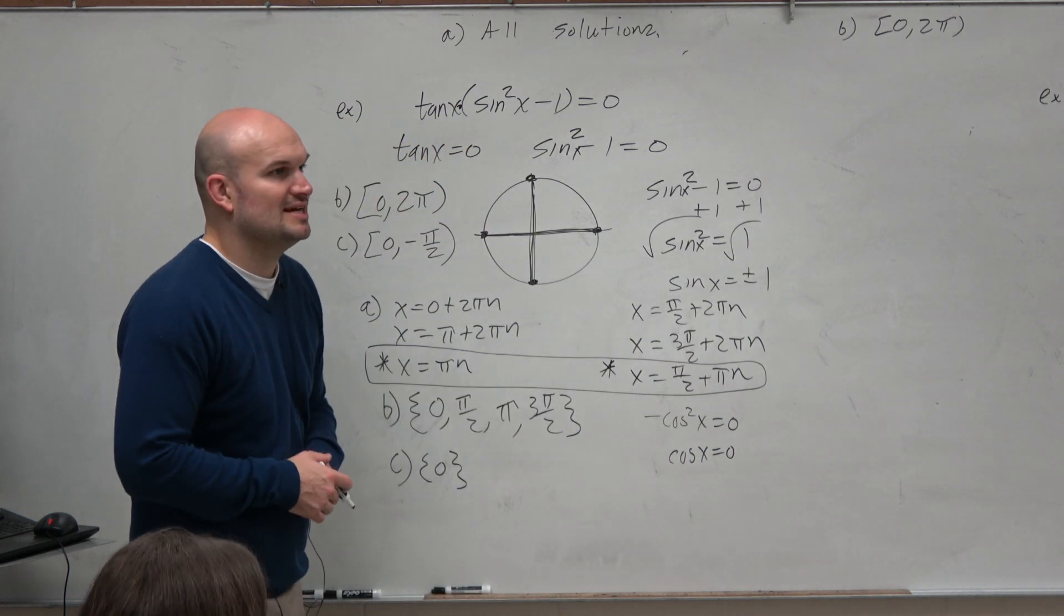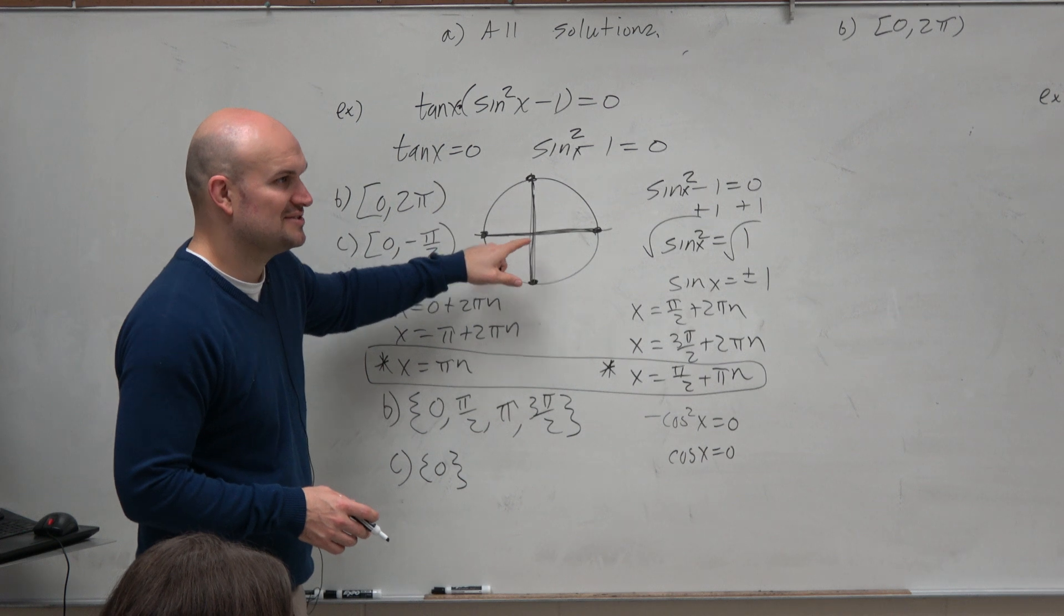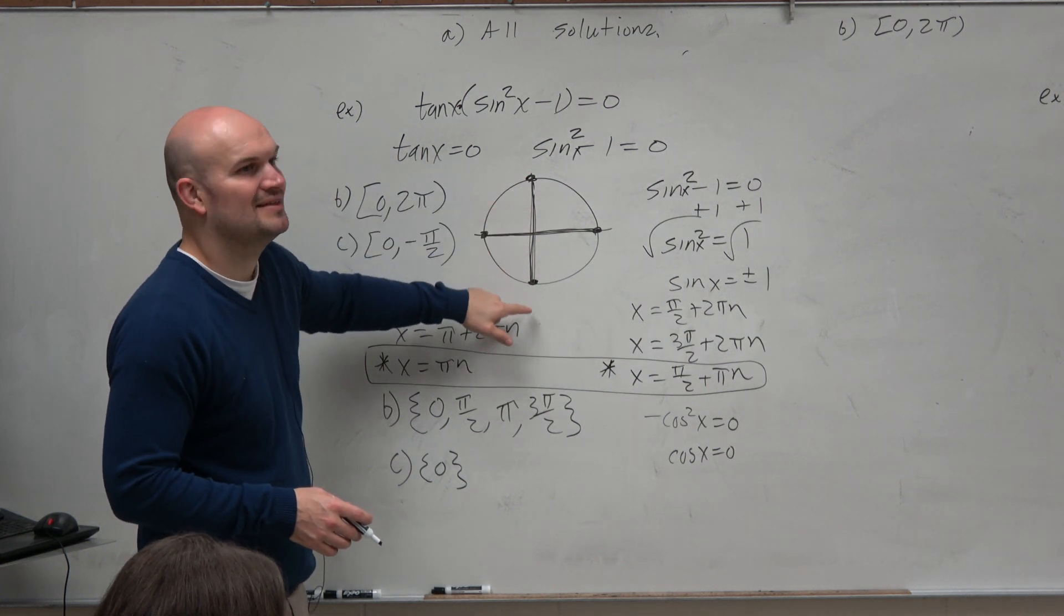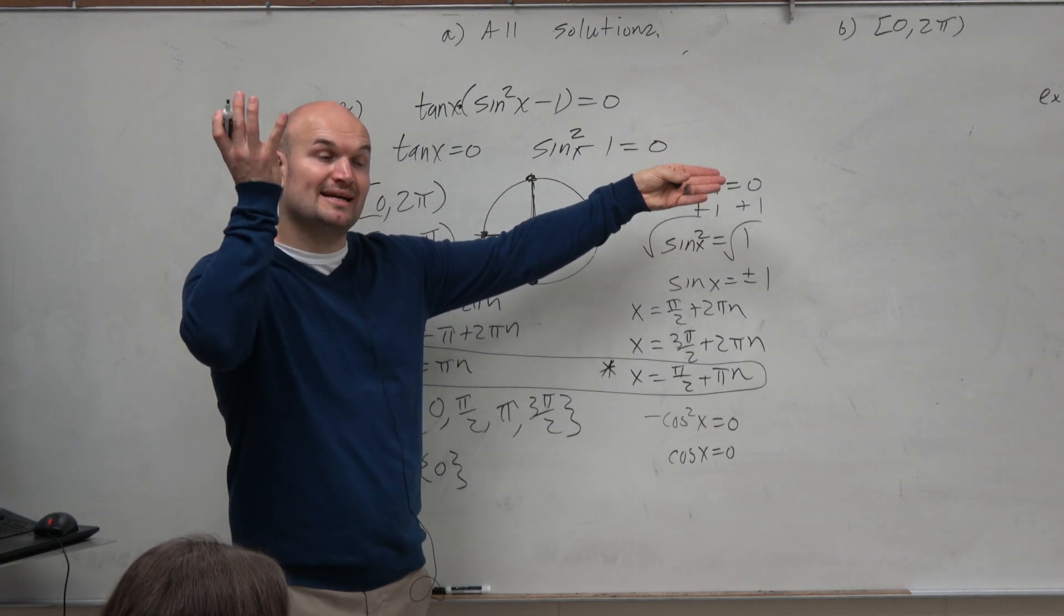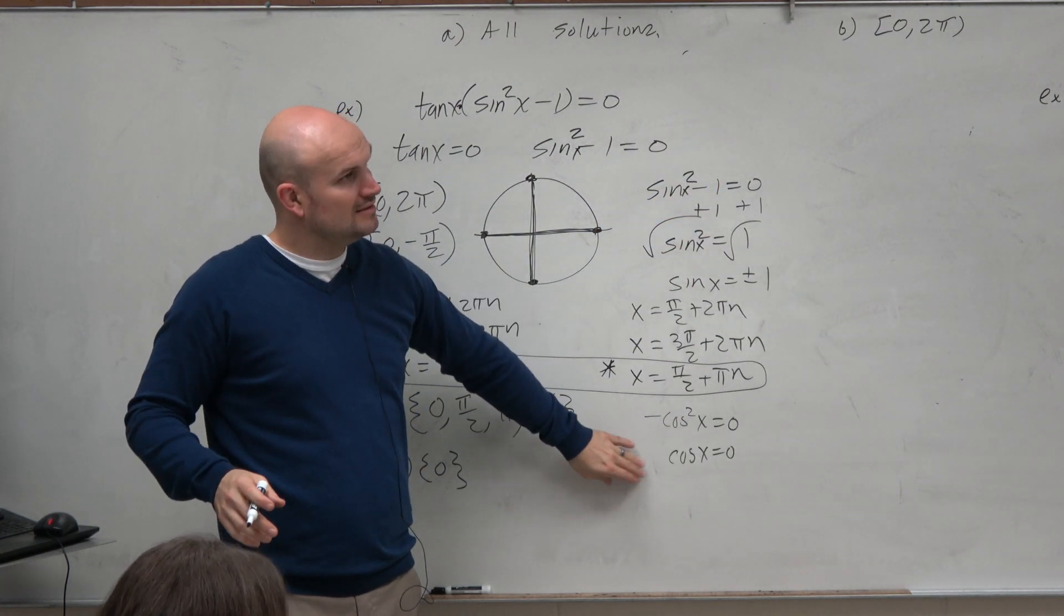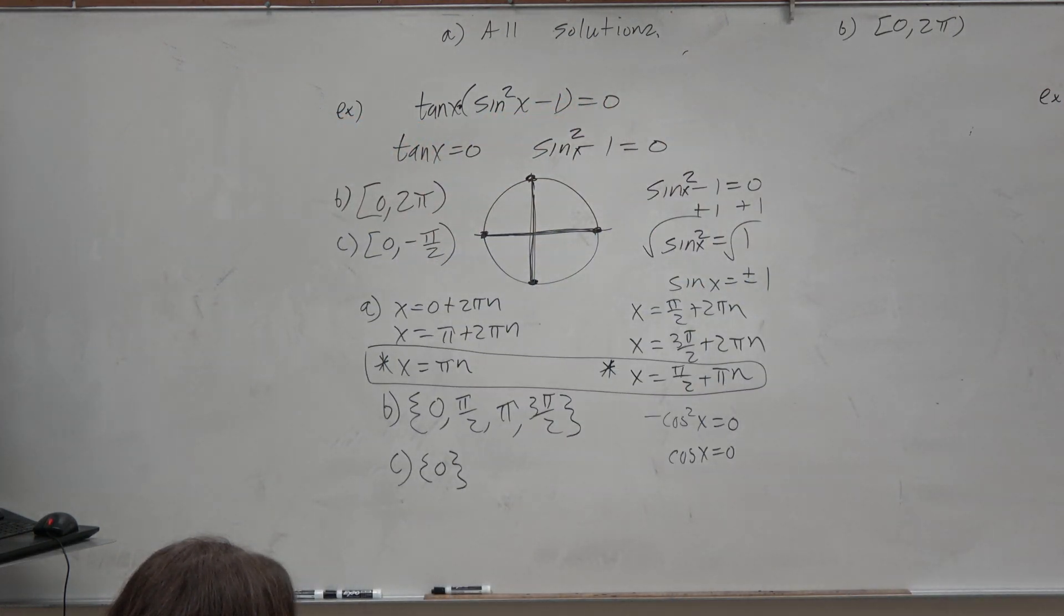For what values of x is cosine equal to 0? When is cosine of x equal to 0? π halves and 3π halves. So if you didn't want to use inverse operations and you recognize an identity, you guys now know identities, right? So you can now use that to your advantage. All right.